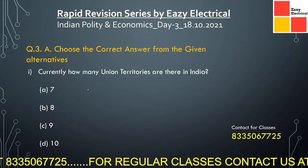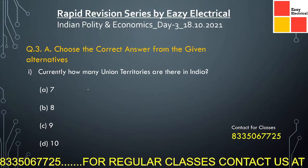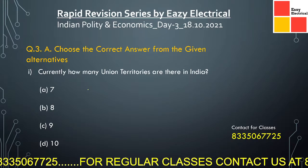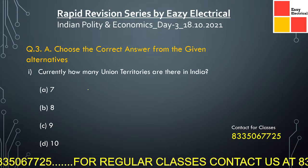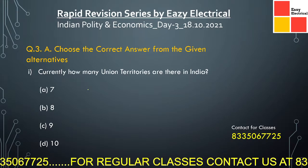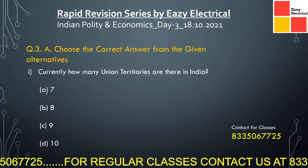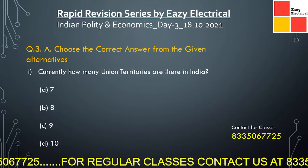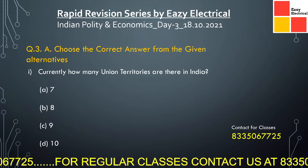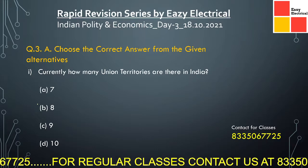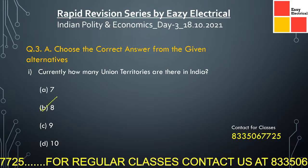Currently, how many union territories are there in India? After the division of Jammu and Kashmir from Ladakh, there are 8 union territories in India. So the answer is option B.